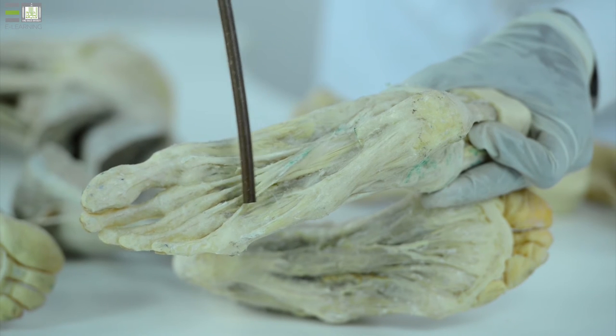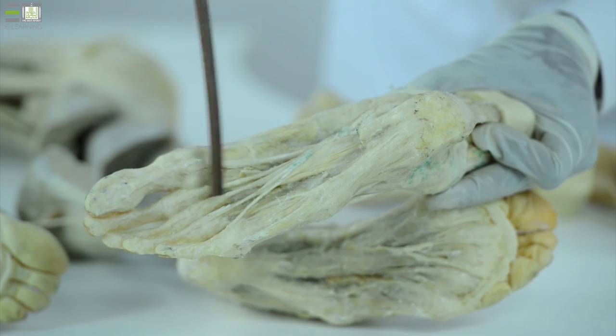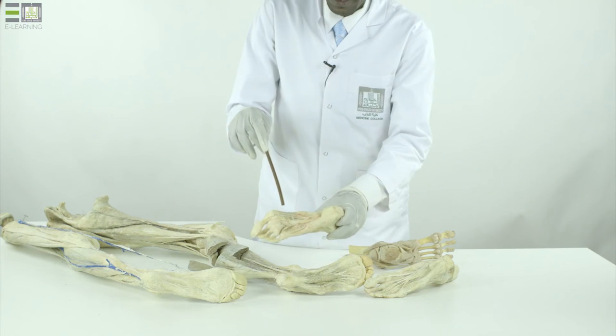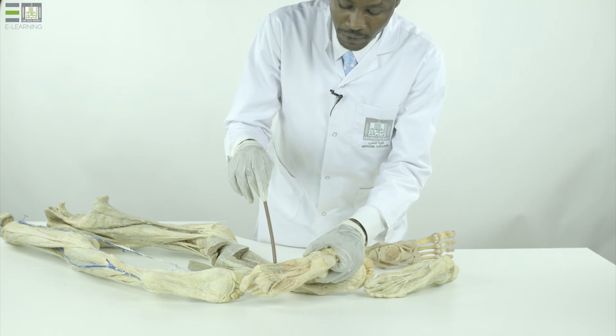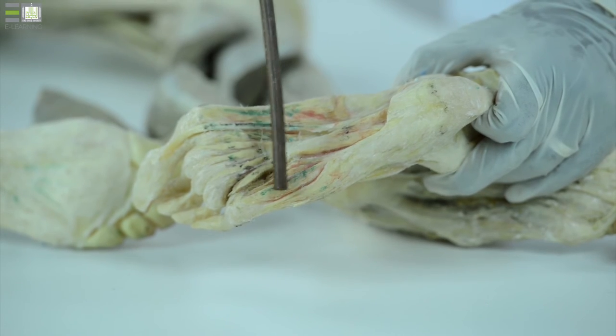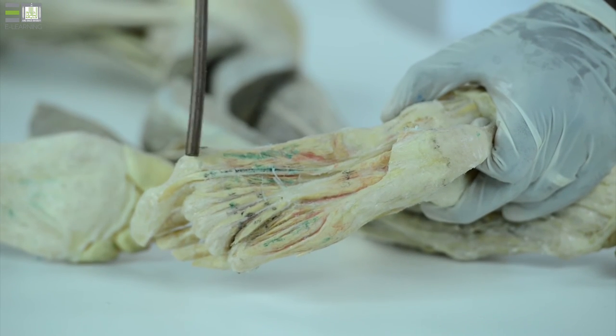In the third layer, within the plantar surface of the foot, there are two flexors, one for the little toe and the other for the big toe, and there is one adductor for the big toe called adductor hallucis.